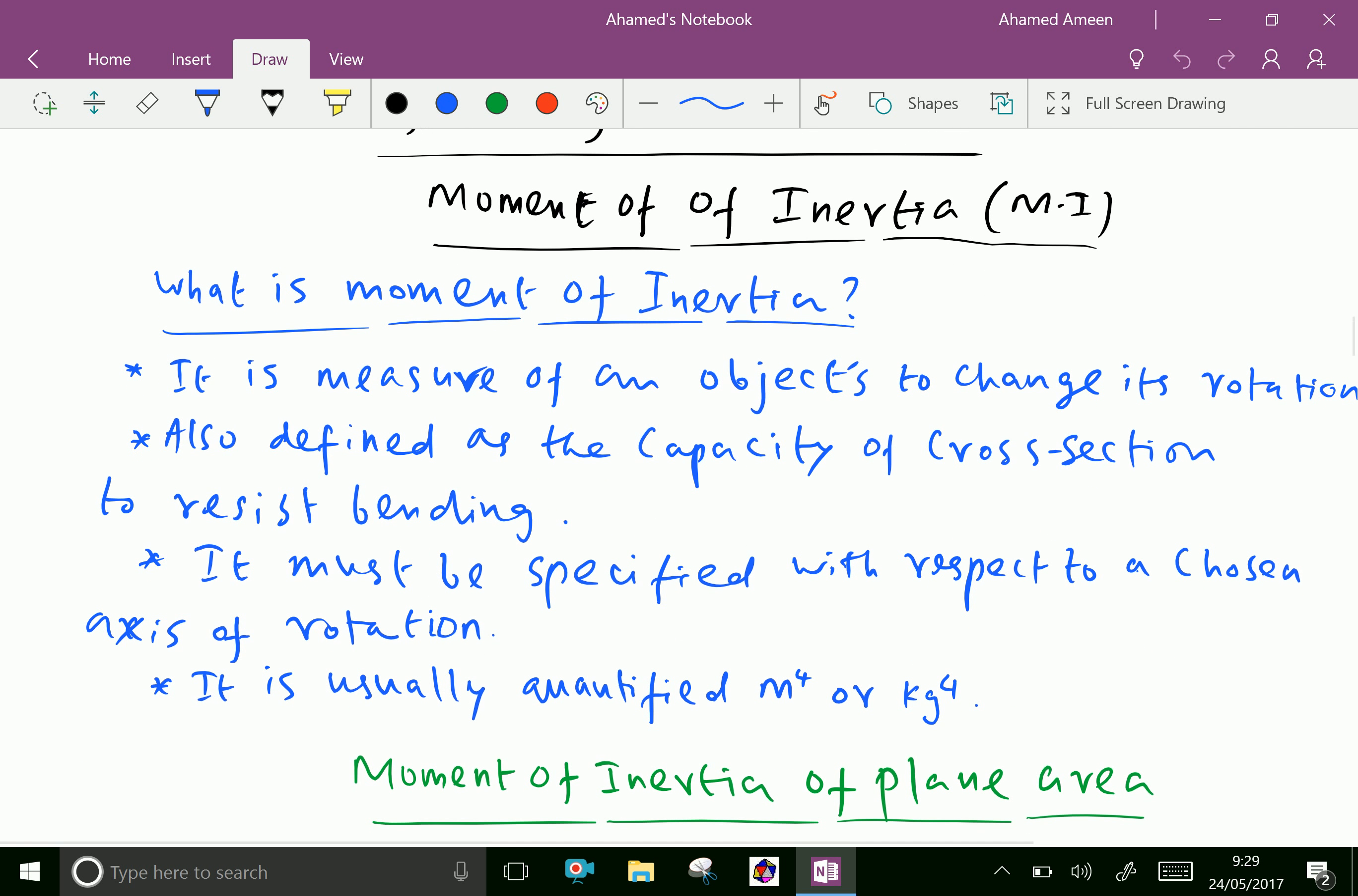It is measure of an object to change its rotation, also defined as the capacity of cross-section to resist bending. It must be specified with respect to a chosen axis of rotation. It is usually quantified by m power 4, that is meter power 4 or kg power 4.